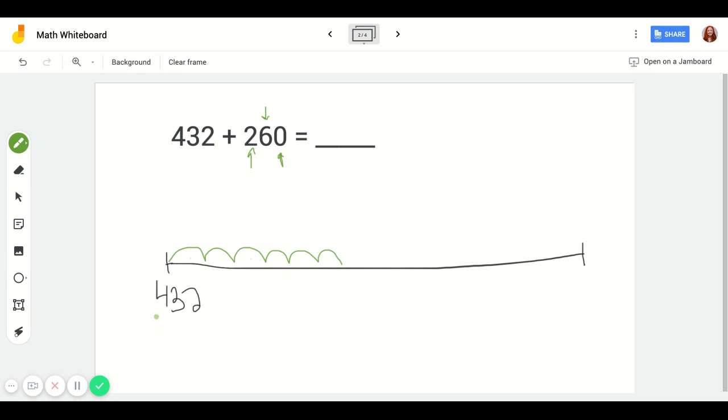So we could use that and skip count from where we started at 432: 432, 442, 452, 462, 472, 482, and 492.